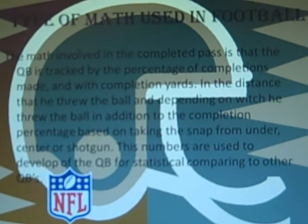Type of math used in football: the math involved in the completed pass is that the QB is tracked by a percentage of completions made, the completion yards, the distance that he threw the ball, which side of the field he threw the ball, and the completion percentage based on taking the snap from under center or shotgun. These numbers are used to develop a statistical model of the QB for comparison to other QBs.